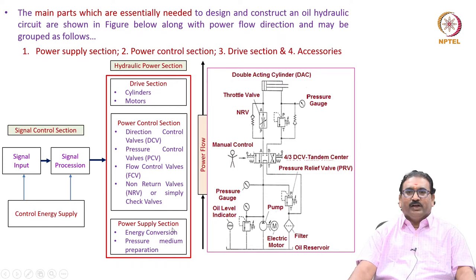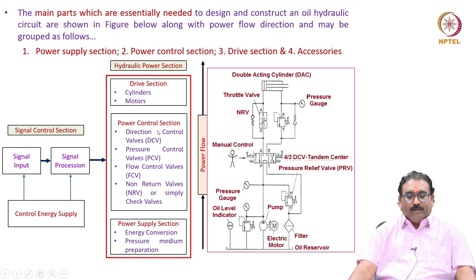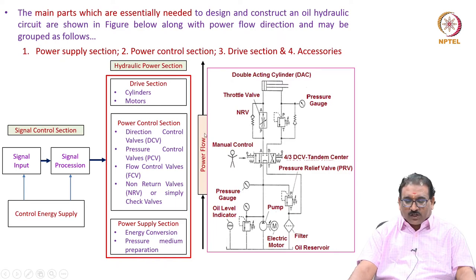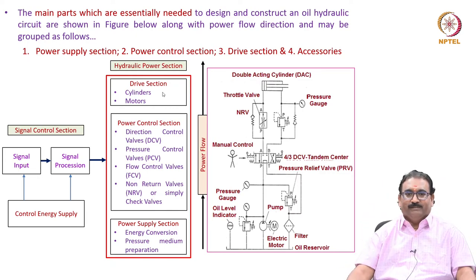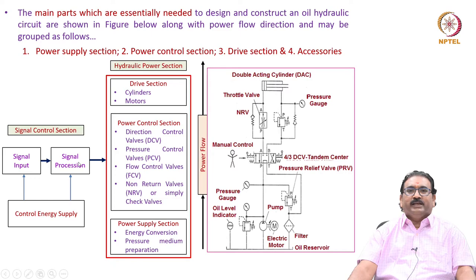Here, you will see the power supply section includes energy conversion and pressure medium preparation and conditioning. The power control section includes various types of valves. The drive section includes actuators — cylinders and motors. Please note, power direction always flows from the power supply section to the power usable area. There is also a signal control section showing signal input and signal processing through the control energy supply.